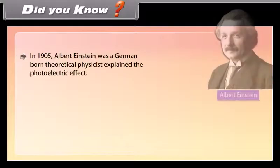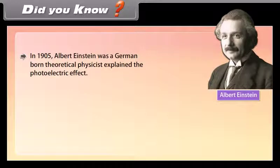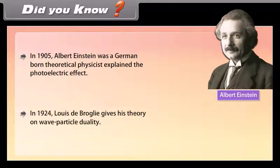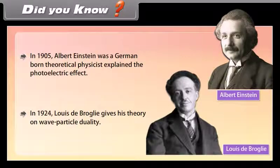Did you know? In 1905, Albert Einstein, a German-born theoretical physicist, explained the photoelectric effect. In 1924, Louis de Broglie proposed his theory on wave-particle duality.